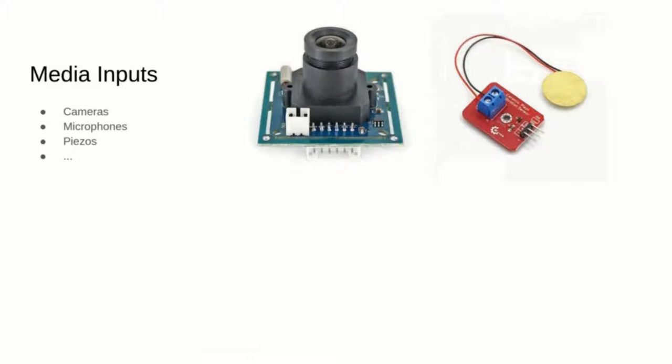The most common multimedia devices that you can hook to microcontrollers are microphones and piezos, which need a single analog I/O pin. If you want to read a camera, you may need a single analog pin if it's CCD-based, or a whole SPI or I2C connection if it has internal memory storing the whole image.